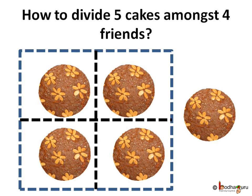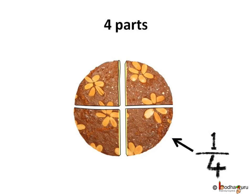First each of them will take one cake each but still one cake remains. How to share it equally amongst four? Well they can divide the cake into four pieces and each friend can take one piece.